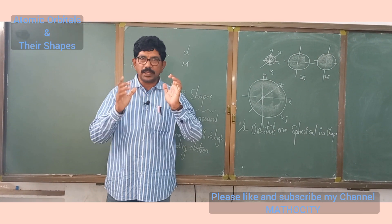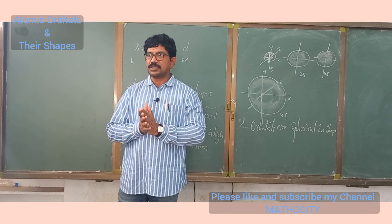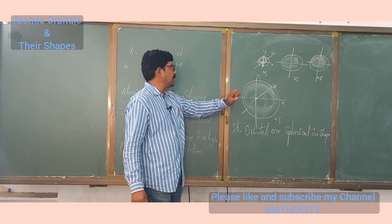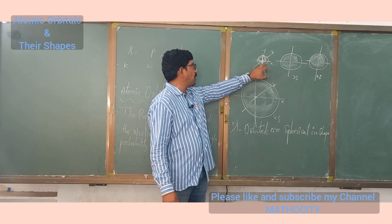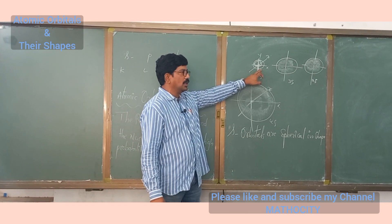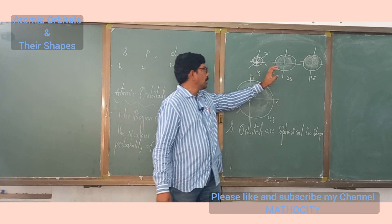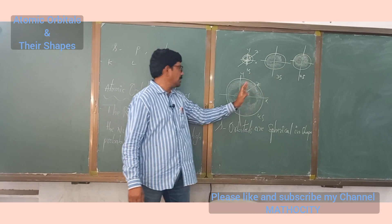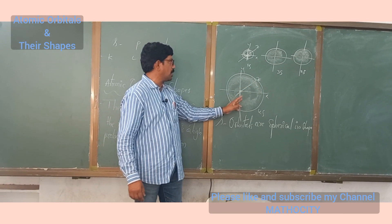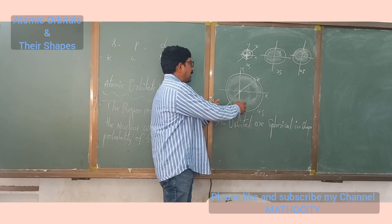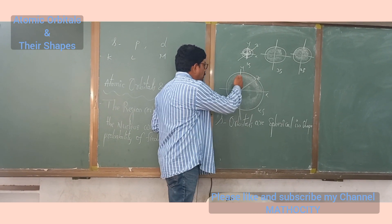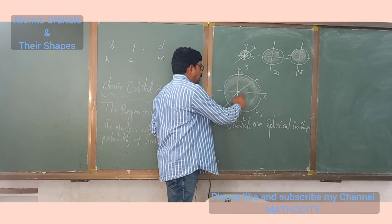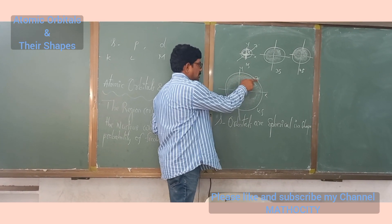All the S orbitals are spherical in shape. This is the 1S orbital, this is the 2S orbital, this is the 3S orbital, and this is the 4S orbital. The electron is present within this region around the nucleus.